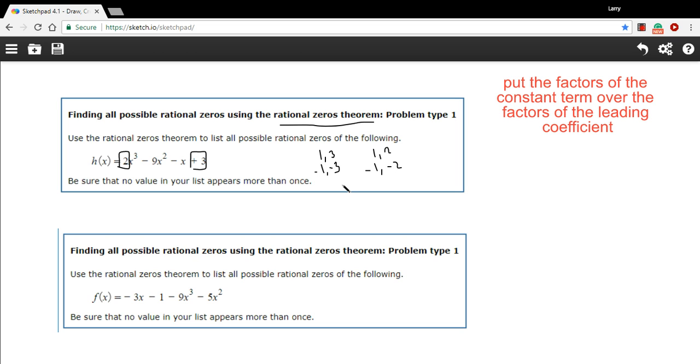Now, what we're going to do is put the factors of the constant term over the factors of the leading coefficient and put them together in all the combinations that there are. So let me see if I can list that. First, I could have 1/1.